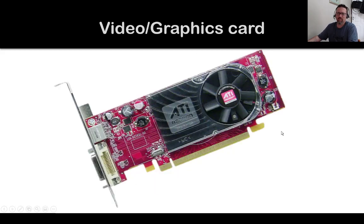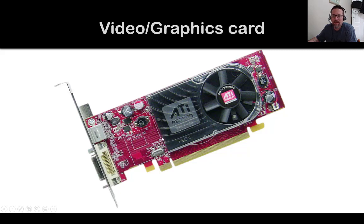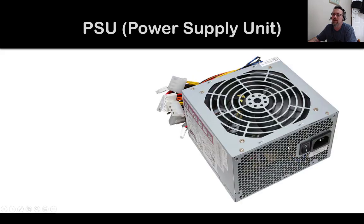A video or graphics card is part of your display. Gamers wouldn't use the onboard graphics display that comes on the motherboard — they'd buy a very fancy one. This one actually has a fan on it, meaning it has its own processor to keep it cool, and there are your output ports. This is a graphics card made to produce high quality graphics, more for graphic designers, people who need high quality graphics, or gamers.